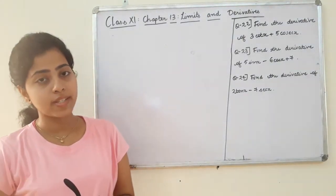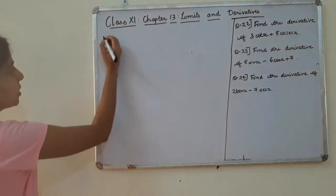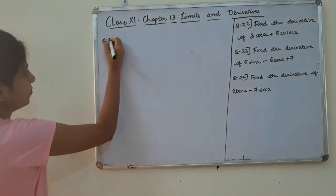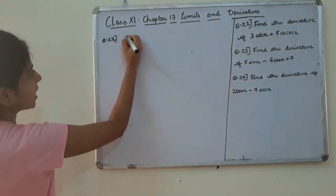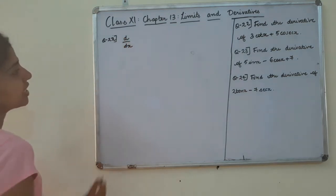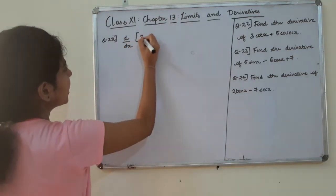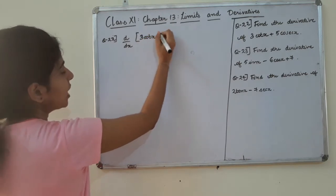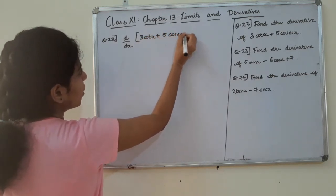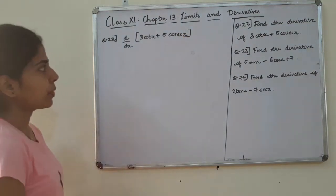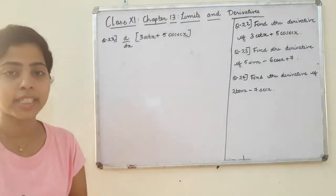Let's discuss Question number 22. We need to find the derivative of 3 cot x plus 5 cos x.